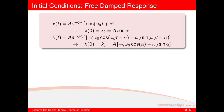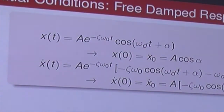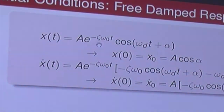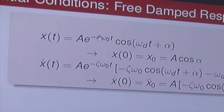We can do a similar thing with the damped response. The top equation is our damped response — very similar to the undamped response except we have the decaying exponential. If you plug in zero for t, e to the power of zero is one so that disappears, the sine term drops to zero, and you end up with A cosine alpha equal to x subscript zero.